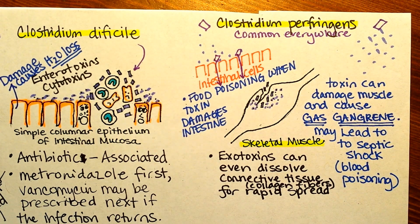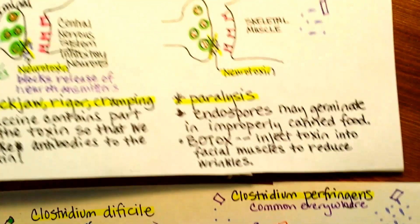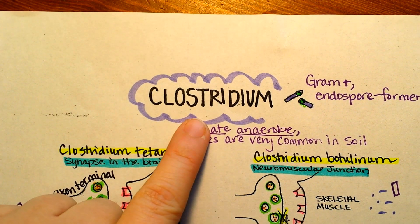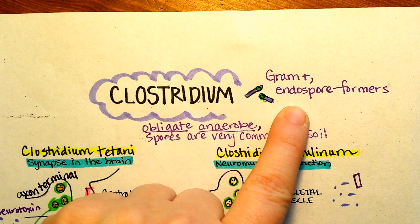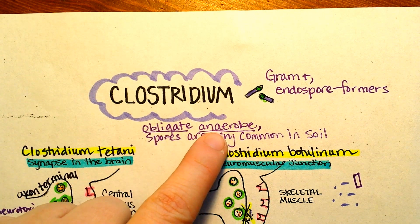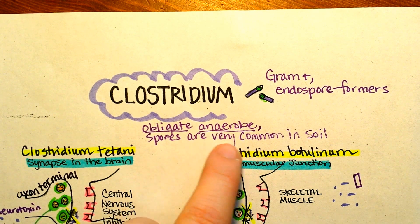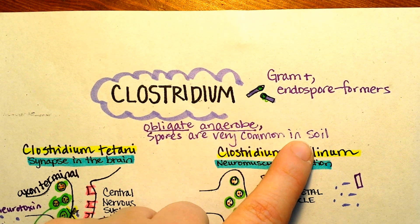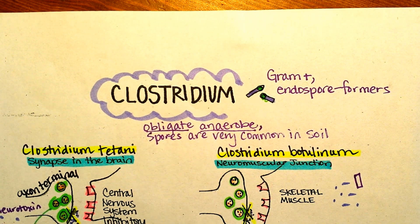To back up for a second and look at these different topics — they're all about the genus Clostridium, Gram-positive endospore formers. They are all significant pathogens in a clinical environment, they are all obligate anaerobes meaning they thrive in an oxygen-free environment, and they're all very common around us. It's interesting to wonder what are the parameters that make someone get one of these infections, because we're all encountering Clostridium every single day.